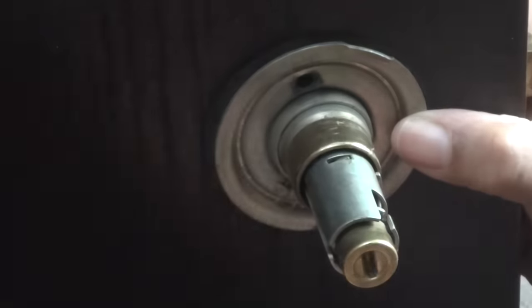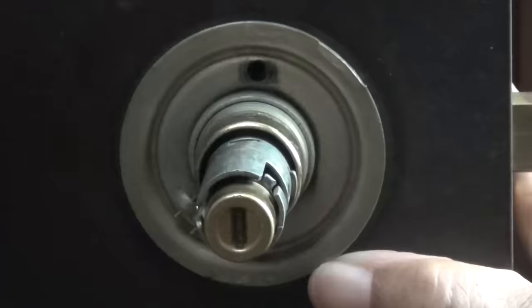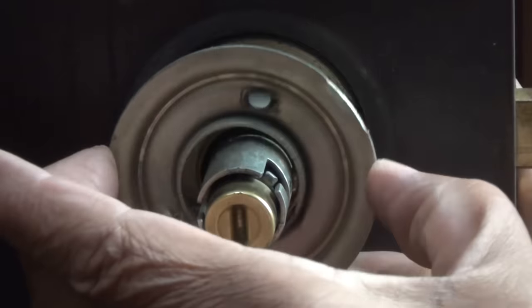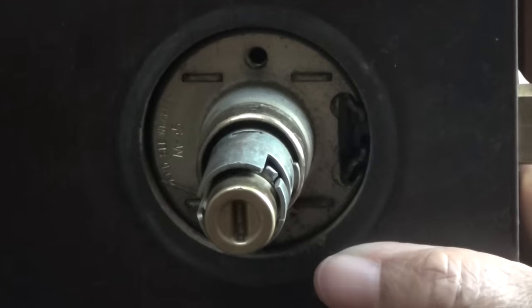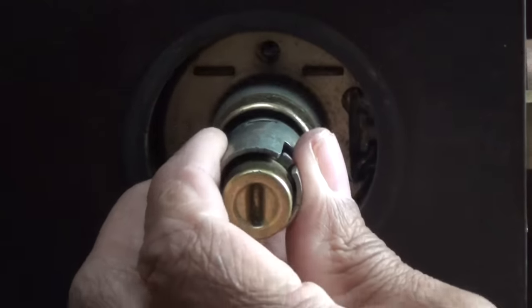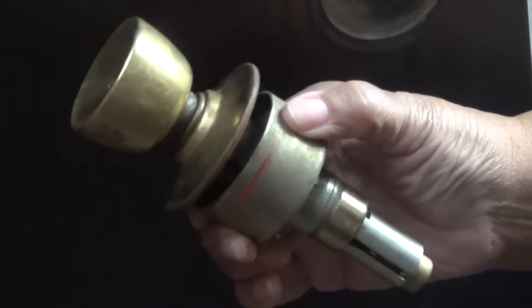I'm going to remove these screws. Now we remove the backplate here, and the doorknob should pull right out. There it goes. It's just that simple.